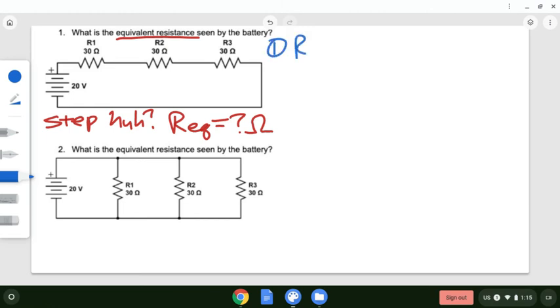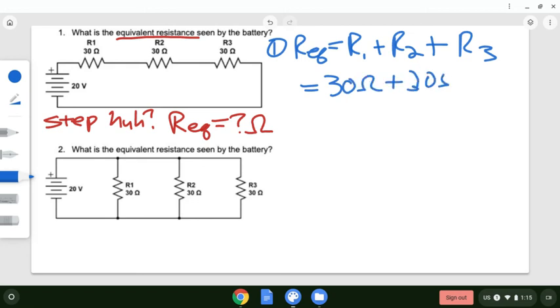So for the first one, R_EQ is just going to be R1 plus R2 plus R3, so that is 30 ohms plus 30 ohms plus 30 ohms.